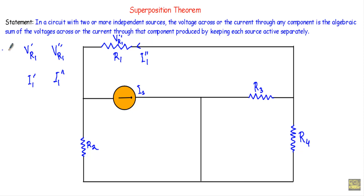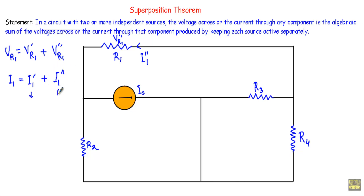Superposition Theorem states that the total voltage across R1, Vr1, will be the algebraic sum of the voltages — that means Vr1 prime plus Vr1 double prime. Similarly, the current through R1, I1, will be the algebraic sum of the currents: I1 equals I1 prime plus I1 double prime. The condition is that I1 prime and I1 double prime must be in the same direction; if they are flowing in opposite directions, I will replace the plus sign with a minus sign.